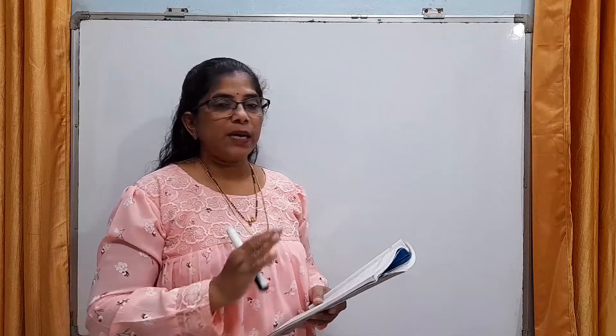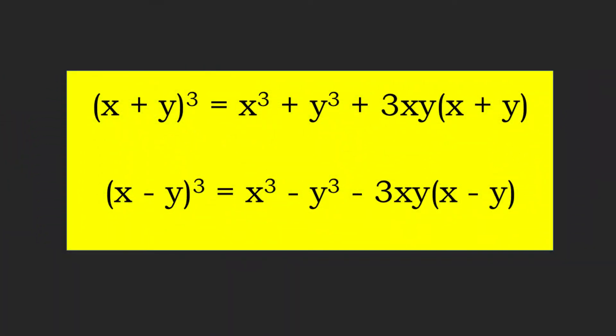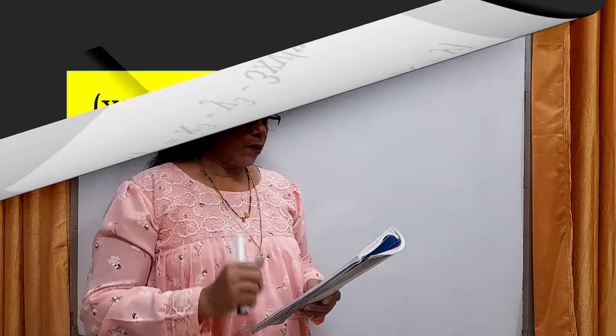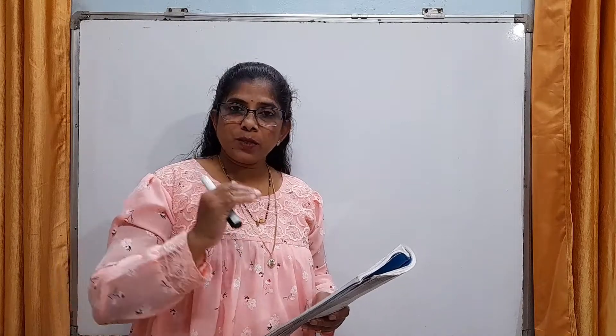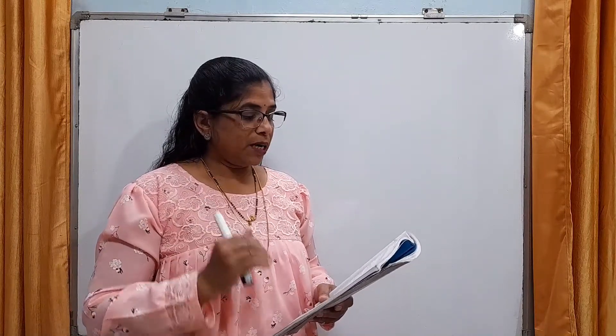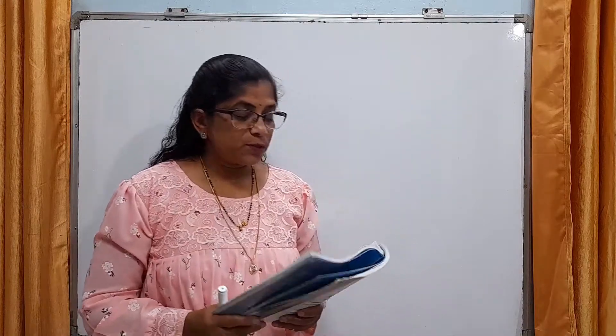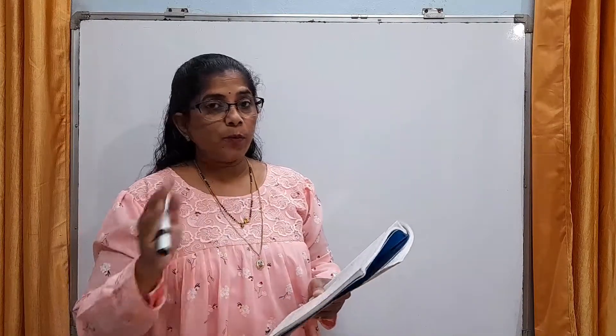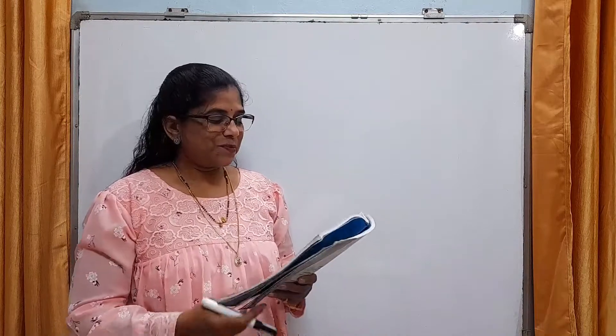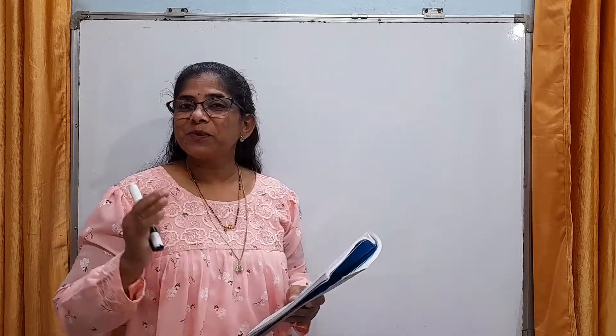Question number 6 and 7 are based on the identities, that is (x+y)³ and (x-y)³. Now, question number 8 is also based on the same identity, but question number 8 is factorization. Means in the previous two sums, we used this identity to find the product — to find the cube of the given terms. Now, here the cube is given and we have to factorize. So, let's start the first sum of question number 8.